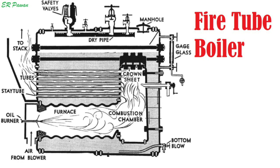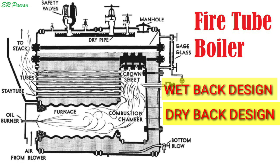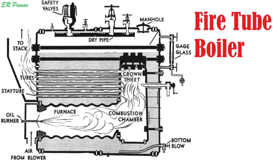In fire tube boilers there are two kinds: one is the wet back design and another is the dry back design. In wet back design there is a water wall at the back of the boiler in the area where combustion gas reverses direction to enter the tubes. In dry back designs, refractory is used at the back instead of a water wall. With the water wall, internal maintenance is required, but refractory replacement is expensive, and overheating, gauging and cracking of tubes at the entrance to return gas passes are common problems.